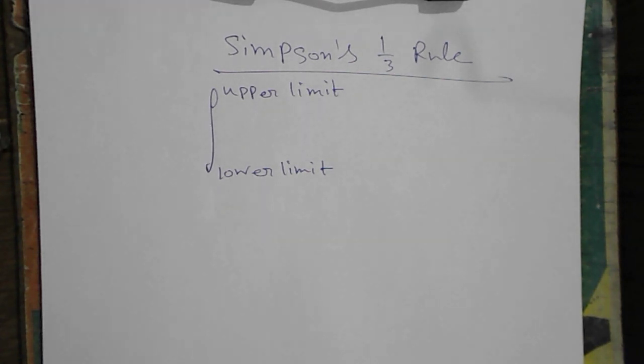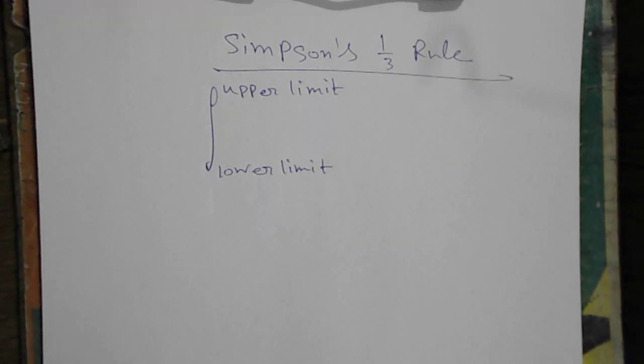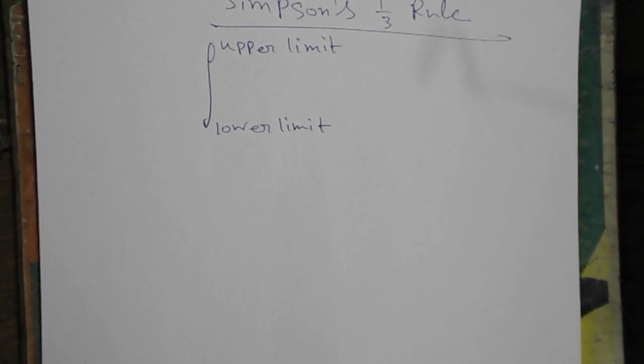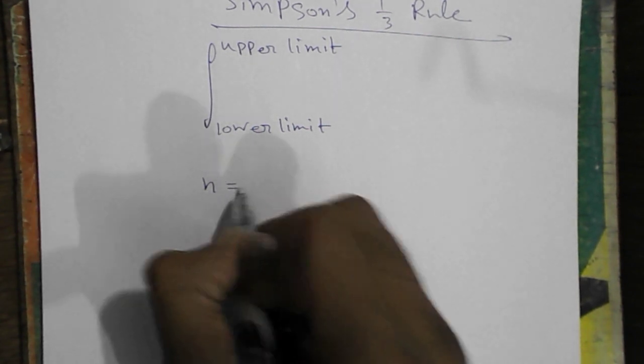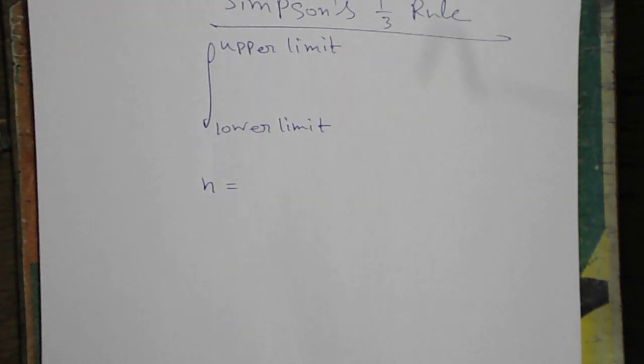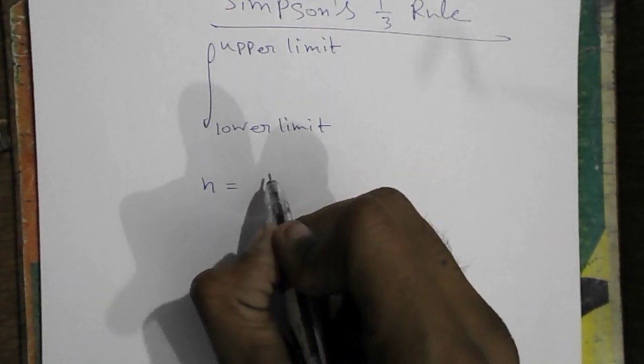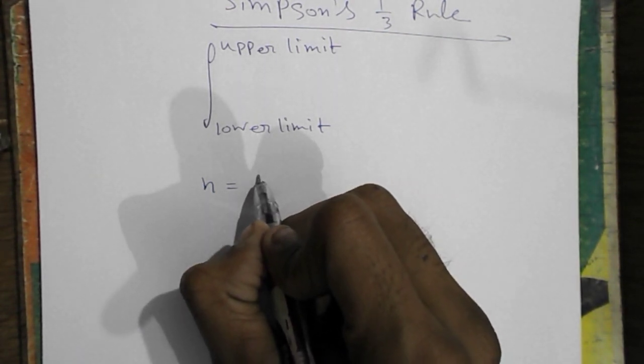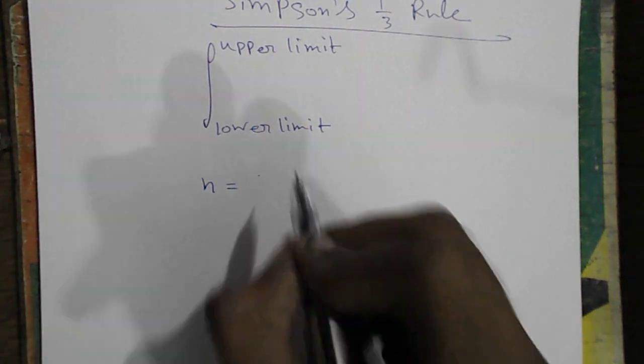To solve the Simpson's one-third rule, we have to know some things before. We have to calculate the h part. To calculate h, we first subtract lower limit from the upper limit.